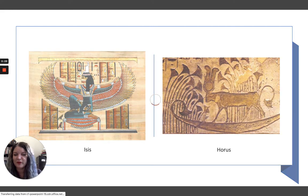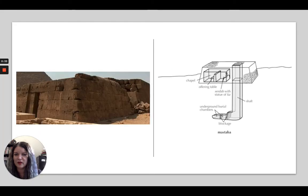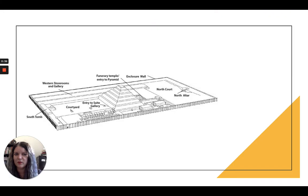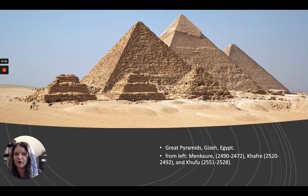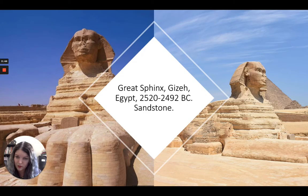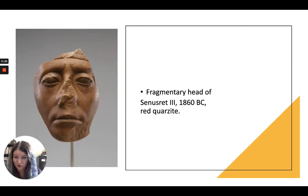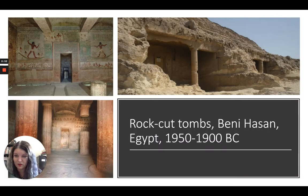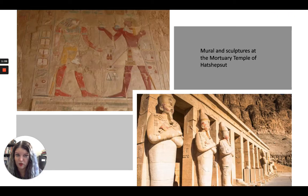We talked about some of the different gods, went through the pre-dynastic and early dynastic parts of Egypt, and talked about a lot of these structures, including the pyramids and the Sphinx. We talked about the rigidity in statues and how that shifts over time toward more naturalistic forms. We discussed how we go from pyramids to rock-cut tombs, and then we end up with temples like that of Hatshepsut, the very powerful female pharaoh.